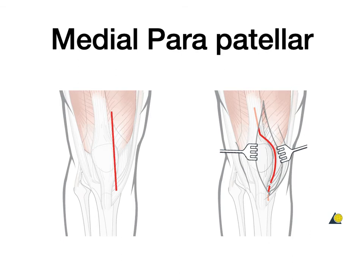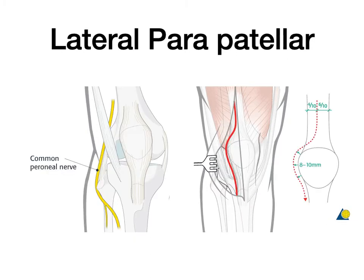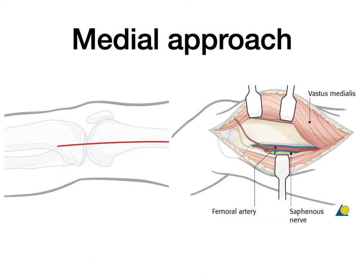The medial parapatellar approach is the standard for knee replacement and most surgeons are familiar with it. For the lateral parapatellar approach, one should be wary of the common peroneal nerve. The quadriceps incision should follow a 40/60 pattern — 40% toward the lateral incision and 60% left on the medial side — with 8–10 mm maintained for adequate closure. For a formal medial approach, be wary of neurovascular structures: the adductor hiatus is typically around 8 cm proximal to the adductor tubercle, where the femoral vasculature transitions to popliteal, and the saphenous nerve supplies the anteromedial knee.